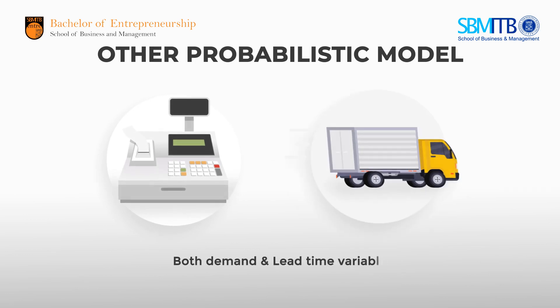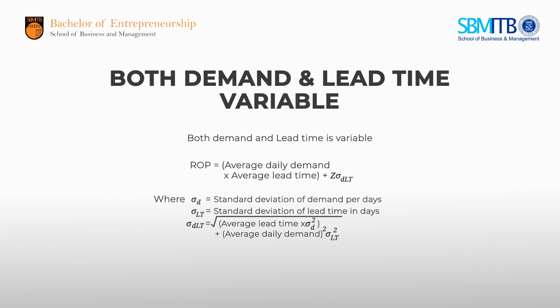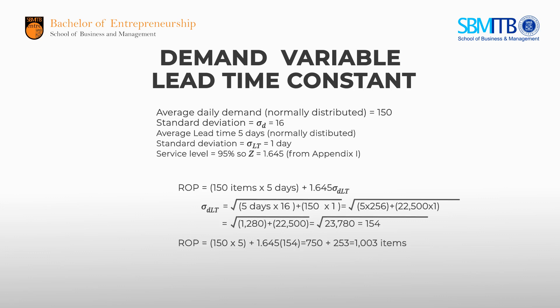When both demand and lead time are variable, we use this ROP formula. If Linda has an average daily demand normally distributed at 150 pieces with a standard deviation of 16, an average lead time of 5 days with a standard deviation of 1 day, and a service level of 95% — so Z from the Z-table is 1.645 — then using the formula, the reorder point is about 1,003 items.